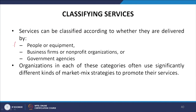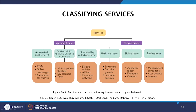Now let us classify services. Services can be classified according to whether they are delivered by people or equipment, by business firms or non-profit organizations, or by government agencies. Equipment-based services include automated self-service, services operated by relatively unskilled operators, and services operated by skilled operators. People-based services can be unskilled labor, skilled labor, or professionals.